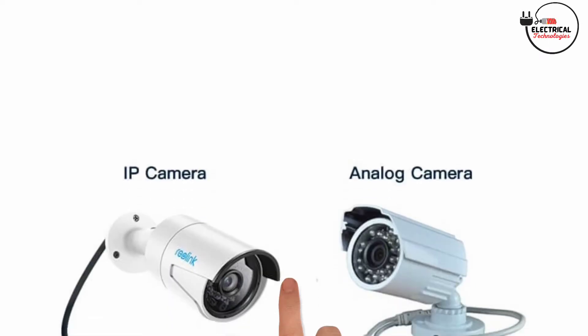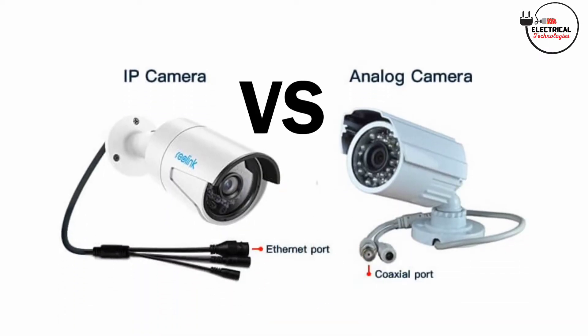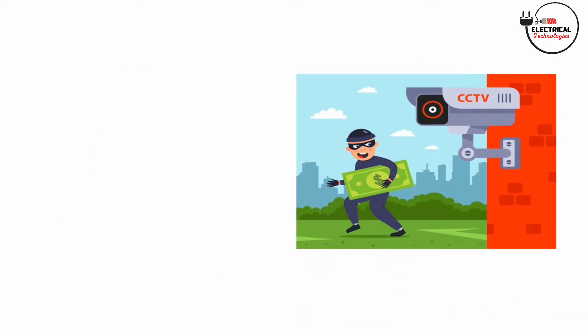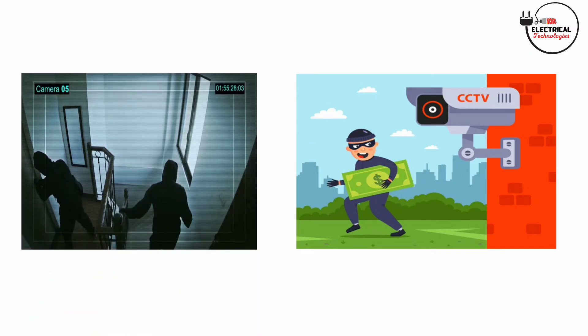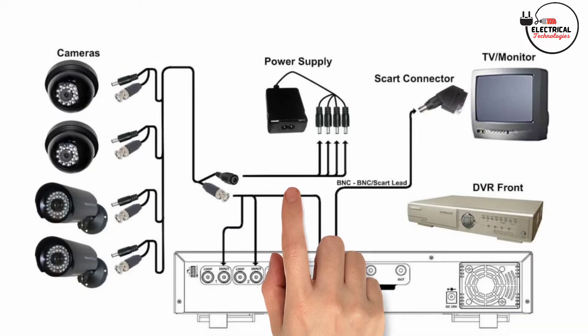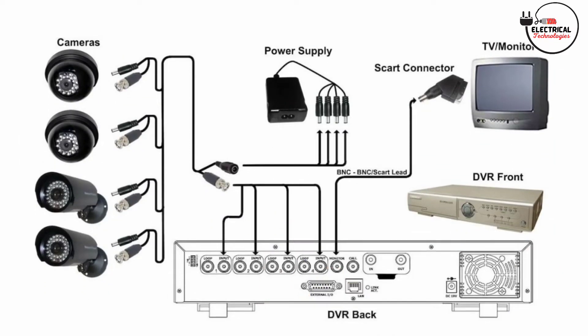There are two kinds of CCTV cameras available that provide powerful protection against criminal activity, possibly damaging your home or business: analog and digital CCTV cameras.